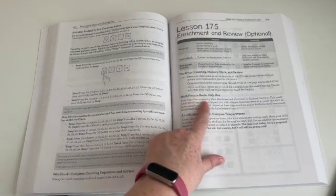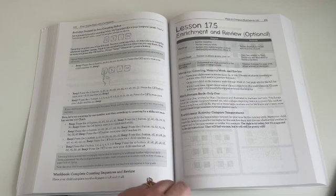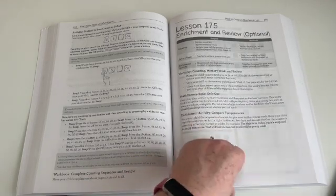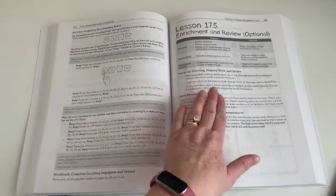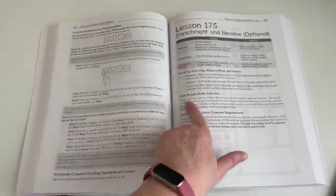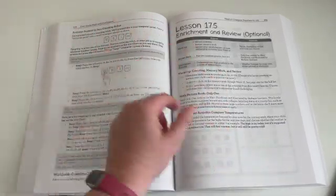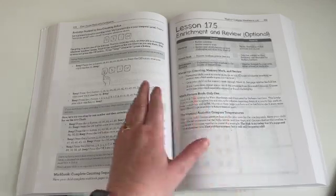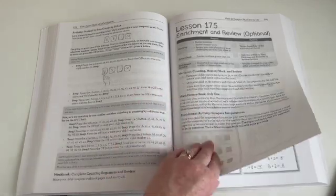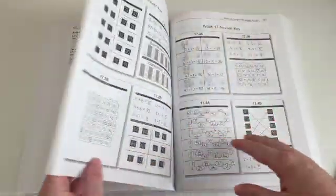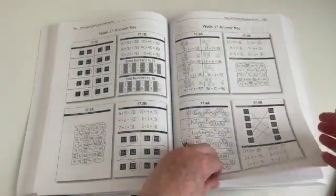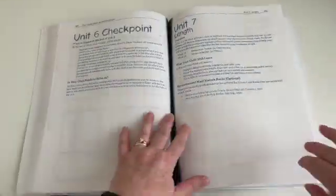So anyways, then our math picture book is Only One. And then our enrichment activity is to compare temperature. So like I said, I easily can fit these in on another day. For example, we might read the book at bedtime one day, and then maybe compare temperatures. We might do that in the morning one day. So I can easily throw those in, but if you do five days a week, then you can just do it on a separate day.